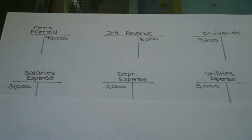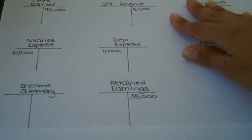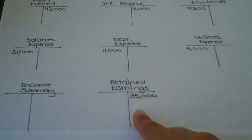You were also given in the initial information a retained earnings account with a beginning balance of $35,000, so I listed that on the credit side.